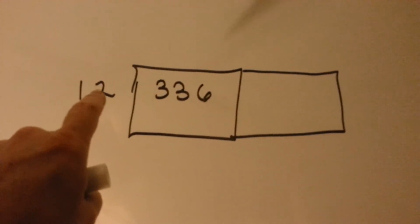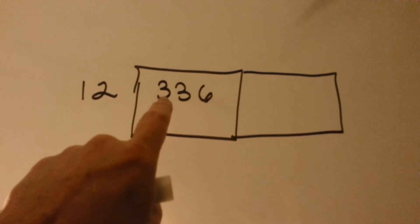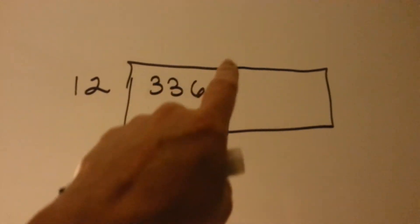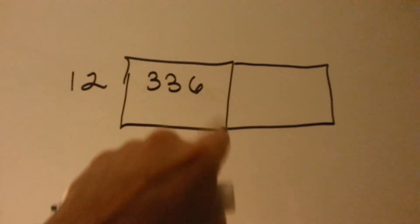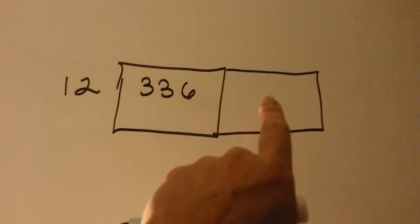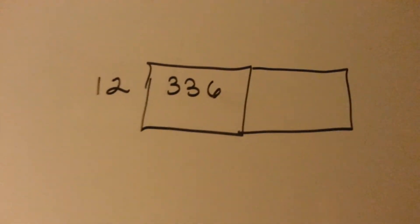We have 12 and we want to put it into 336. So we put the 12 on the outside to the left and we make a box. And we know we're going to need another box, and maybe even another one, so we'll see.